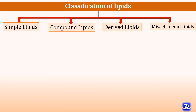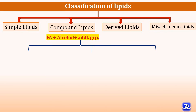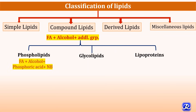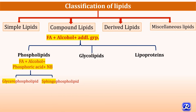Compound lipids are made up of fatty acids plus alcohol plus an additional group such as phosphorus. Examples are phospholipids, glycolipids, and lipoproteins. Phospholipids consist of fatty acid plus alcohol plus phosphoric acid and a nitrogenous base. Depending on the type of alcohol present, they are further classified as glycerophospholipids if the alcohol is glycerol, and sphingophospholipids if the alcohol is sphingosine.